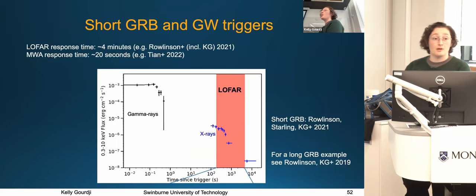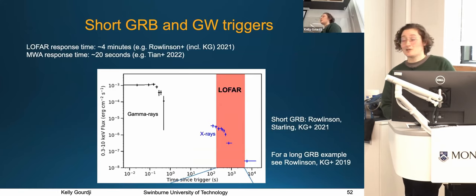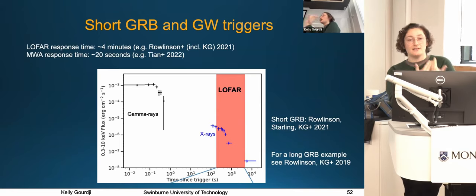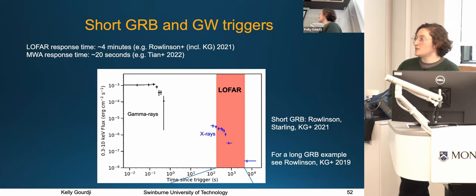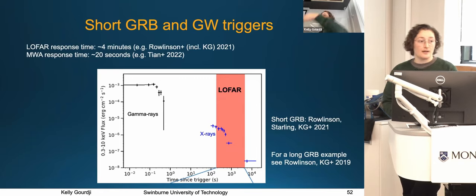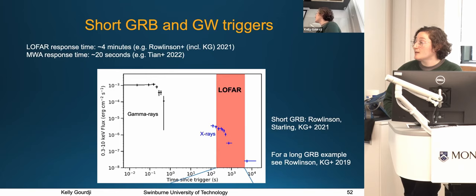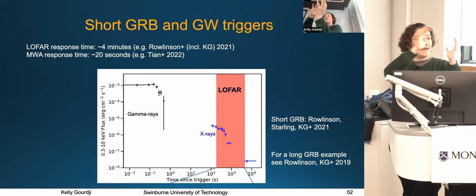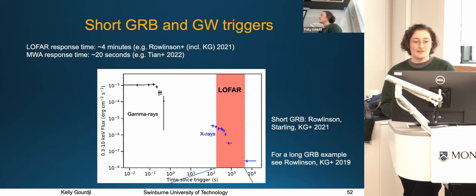A completely different — proactive — approach uses those two indicators of neutron star mergers: short GRBs or gravitational waves. Given that we've just detected one, we can point a radio telescope to the position of those transient events and see if we can catch associated radio emission. To do this, time is of the essence — many models predict you'd miss the emission if you're not on source within a few seconds. Radio interferometers are best for this because they're completely electronically steered, with no mechanical slewing, so in theory you can get on source within a few seconds.